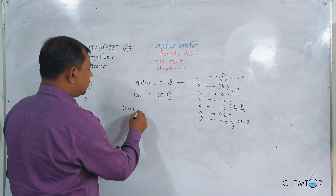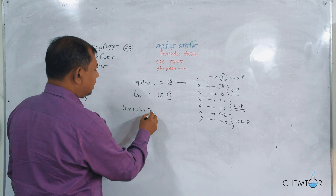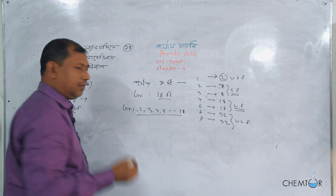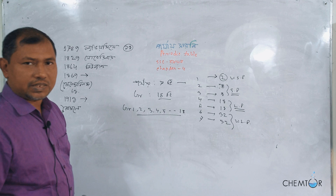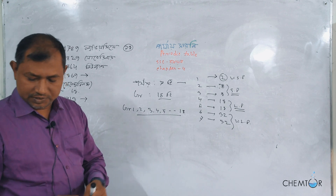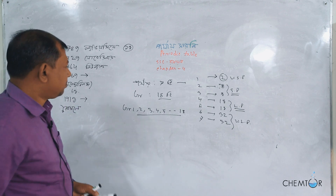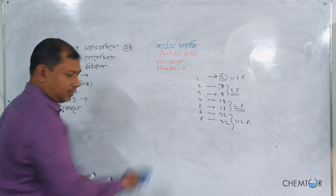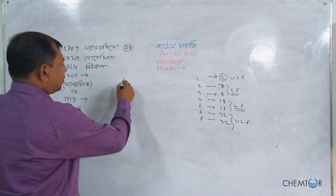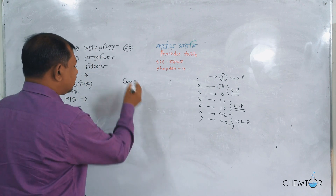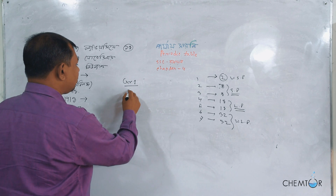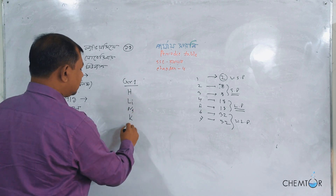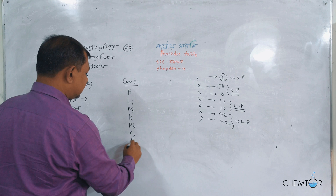And the group is 8.8. The group is called group 1, 2, 3, 4, 5. The name of the group is called hydrogen, lithium, sodium, potassium, rubidium, cesium, francium.